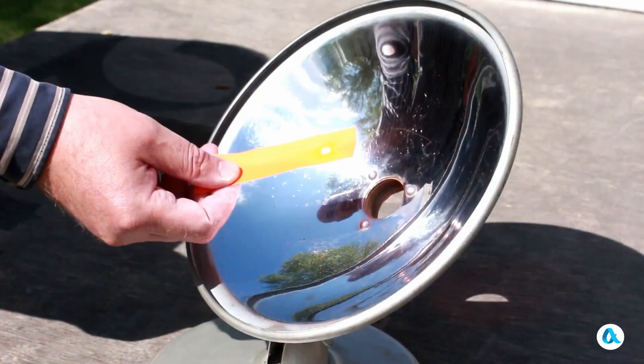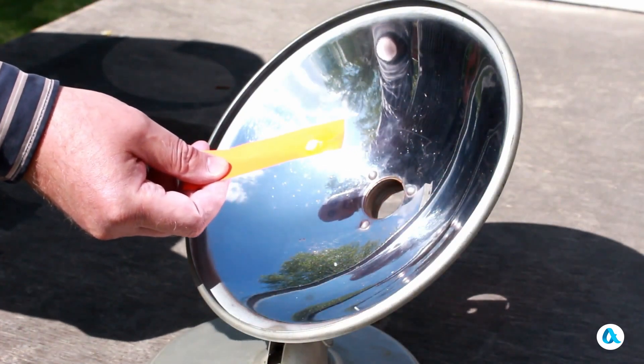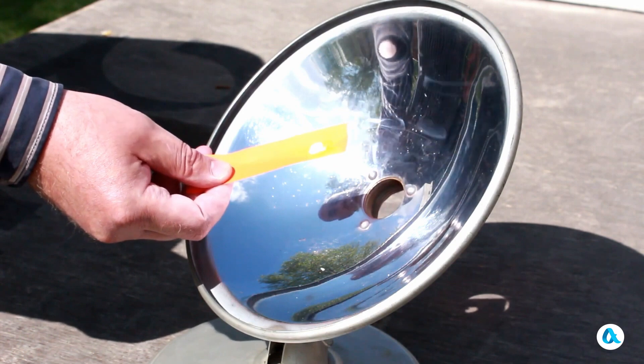I will start with an experiment that many physicists have conducted starting from Archimedes by directing a parabolic mirror towards the Sun. I bring a piece of paper close to the mirror so that a bright spot of light appears on it. And it starts to smoke right away. The concentration of solar energy in this spot is extremely high.